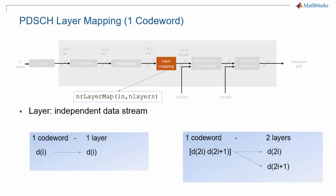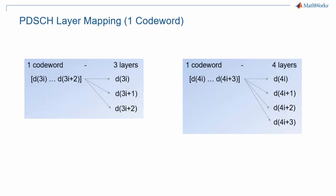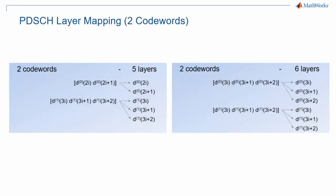Anything beyond four layers uses a second codeword. The mapping is pretty straightforward: direct for one layer, alternating for two. Similarly, for three and four layers, each group of three or four input bits is mapped to a set of three or four layers. For five through eight layers, the two codewords are split between the different layers.